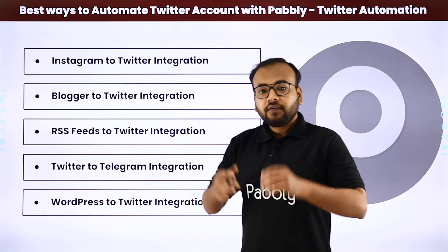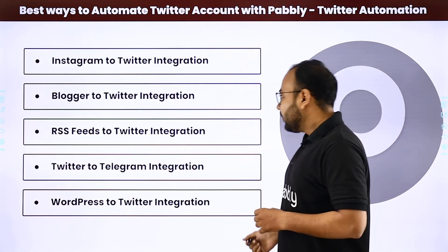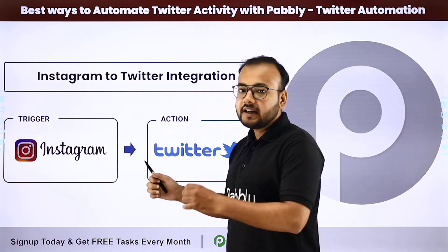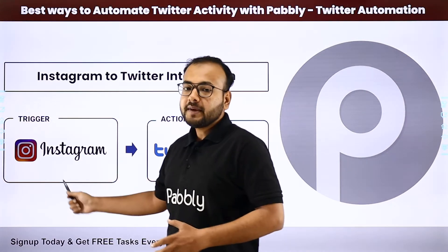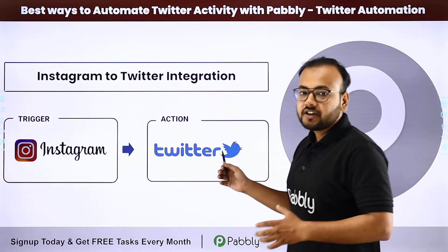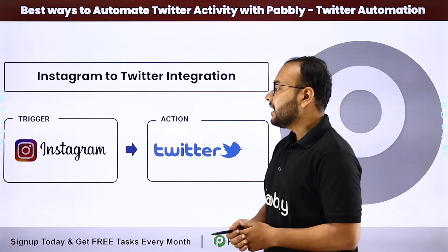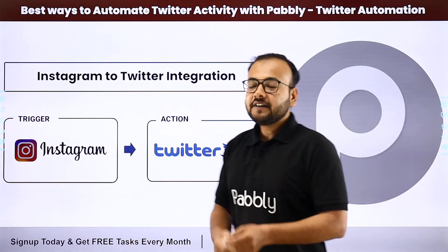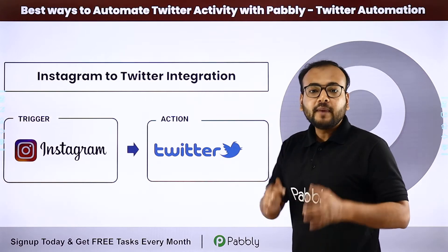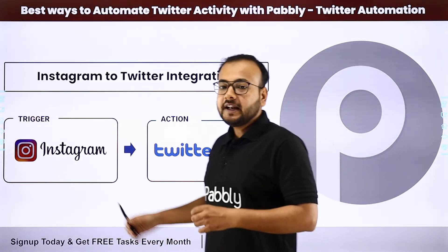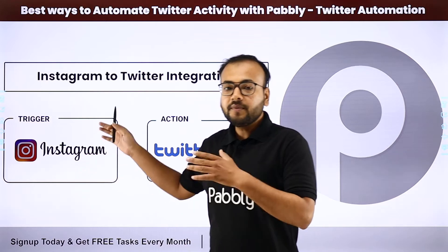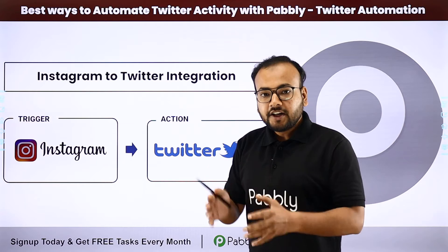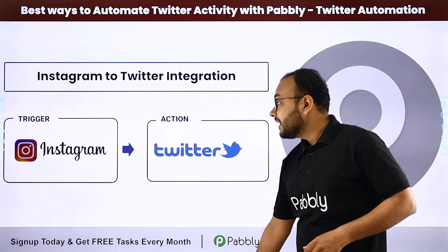The first automation is Instagram to Twitter. Here we are connecting Instagram as the trigger application and Twitter as the action application, so that whenever you post anything on Instagram, the same post will be created from your Twitter handle automatically. You do not have to manually copy and paste content from Instagram to Twitter — it will save your time and reduce your manual efforts.